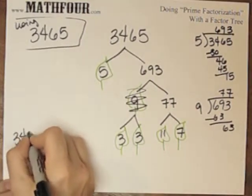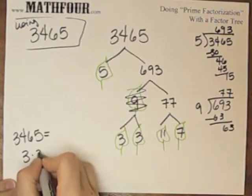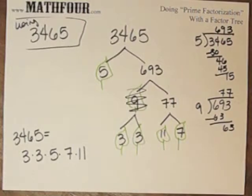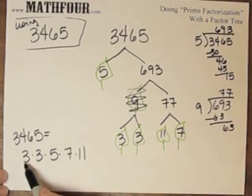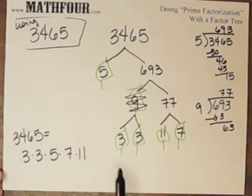So 3465 equals, and we try to put them in order, 3 times 3 times 5 times 7 times 11. I put them in order because when we do other things with prime factorization, this isn't the end goal. This is just something to be used for other things. When we use it for other things, it will be helpful when it's in order.